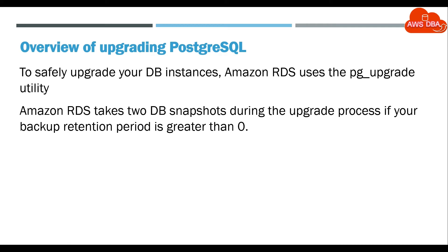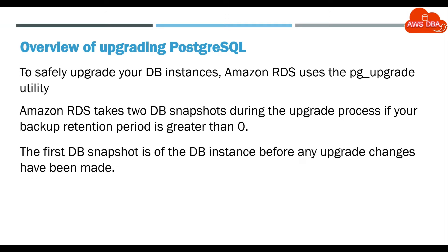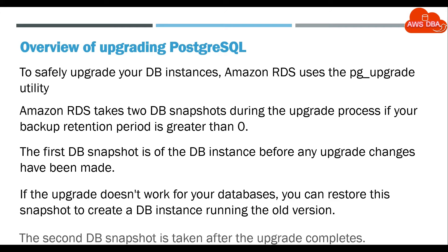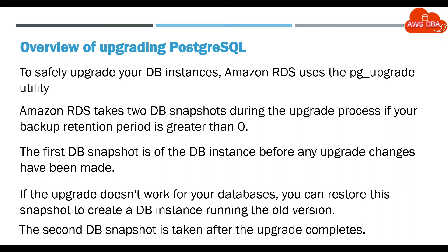Amazon RDS takes two DB snapshots during the upgrade process, if your backup retention period is greater than zero. The first DB snapshot is of the DB instance before any upgrade changes have been made. If the upgrade doesn't work for your databases, you can restore this snapshot to create a DB instance running the old version. The second DB snapshot is taken after the upgrade completes.